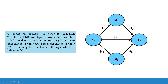But Y1 will also affect Y2 through mediator M1 and mediator M2: Y1 to M1, M1 to Y2, Y1 to M2, and M2 to Y2. The direct effect is P3 and indirect effects are P1×P2 plus P4×P5. The total effect is the summation of direct plus indirect: P3 + P1×P2 + P4×P5.